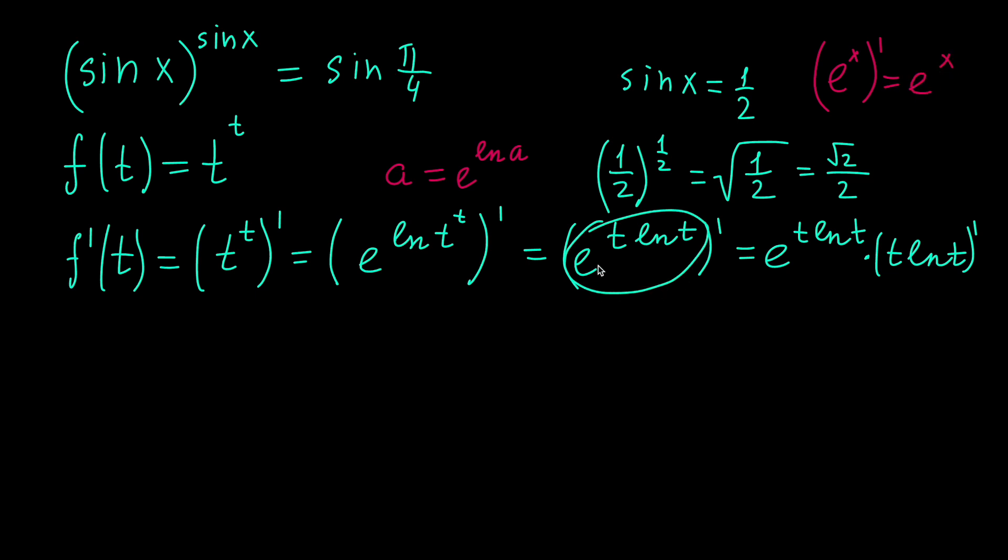But since this is a composition of two functions, we multiply it by the derivative of the exponent. So now we just have to find the derivative of a product of two functions. So we have e raised to the power of t natural logarithm of t times natural logarithm of t plus t times 1 over t.